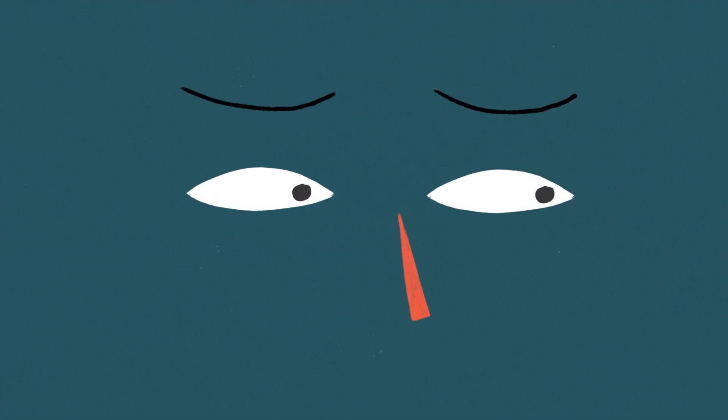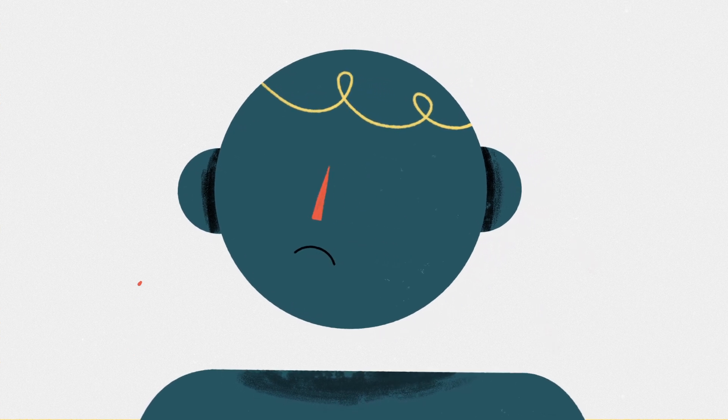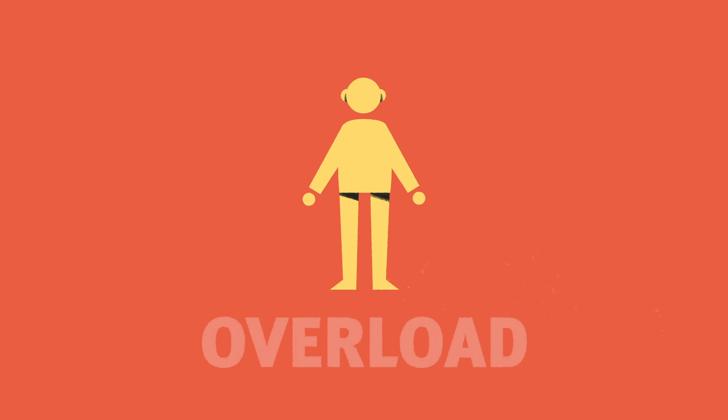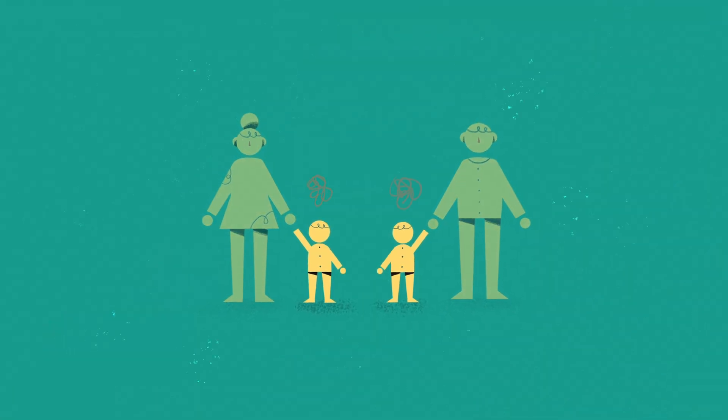Stress that puts us in a constant state of fight or flight can make it feel like we're always on edge, or like it's impossible to calm down. And these feelings can overload our ability to provide the supportive relationships that children need in order to thrive.